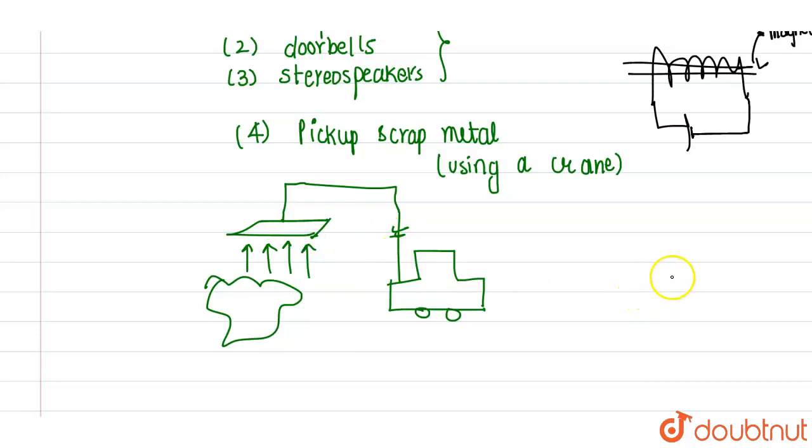And at a certain distance, after going at a place where you have to dump this particular scrap metal, you will just cut off the electricity supply. Then this will behave as a normal plate and all of this flux will go down.